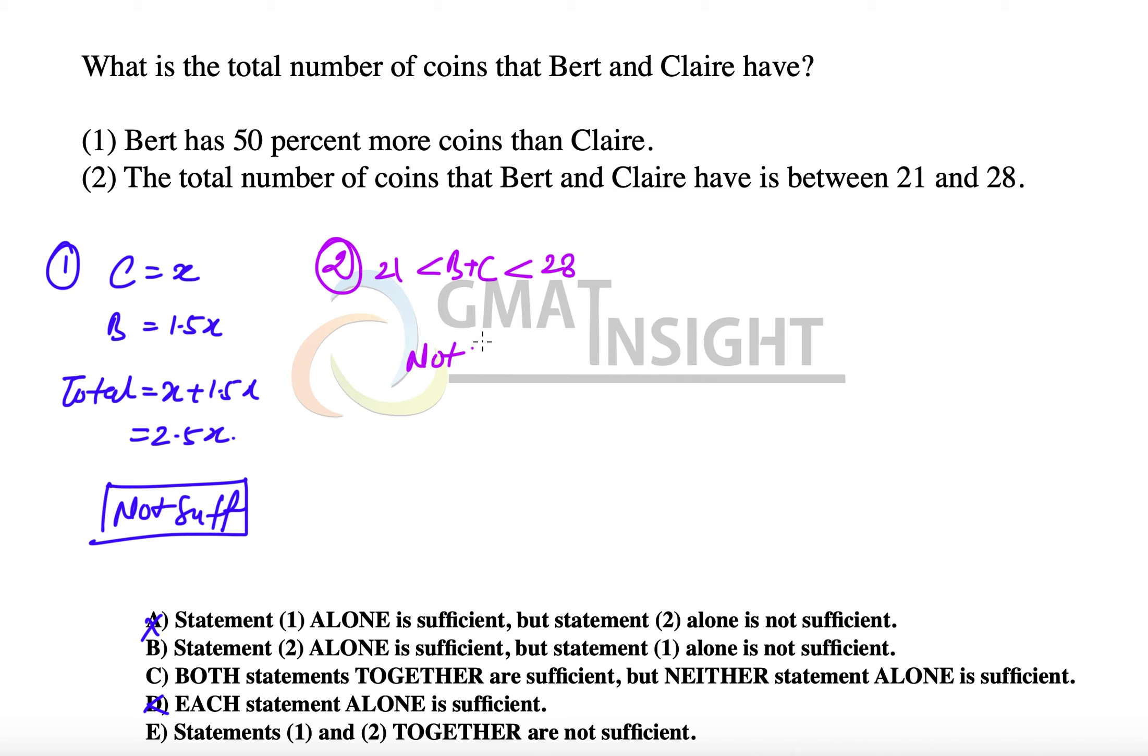Once again it is not sufficient because it could be 22, 23, 24 up to 27. So option A, B, and D are out and now we are combining the two statements.